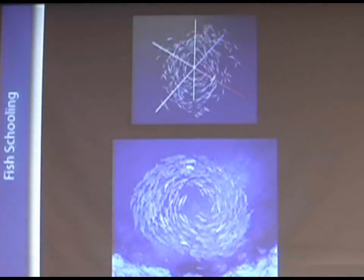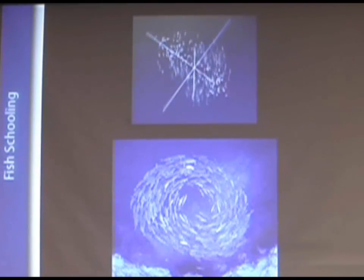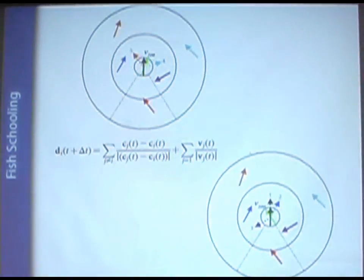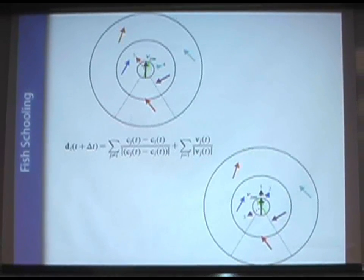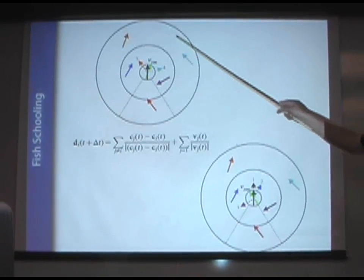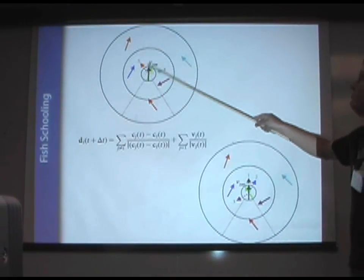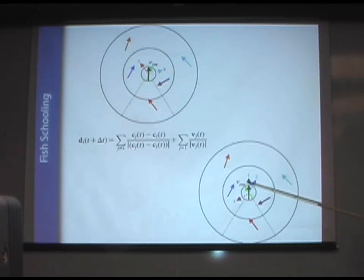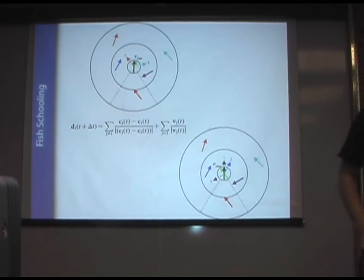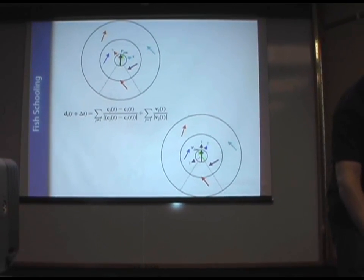And this is just giving you an example of what the model looks like. And in these types of models, another thing that I've been thinking about a lot lately is we have this kind of averaging behavior. This is the averaging of the attraction zone, this is the averaging in this alignment zone. We don't really know whether organisms are just simply doing this averaging behavior. They could be doing something much more complex than that.